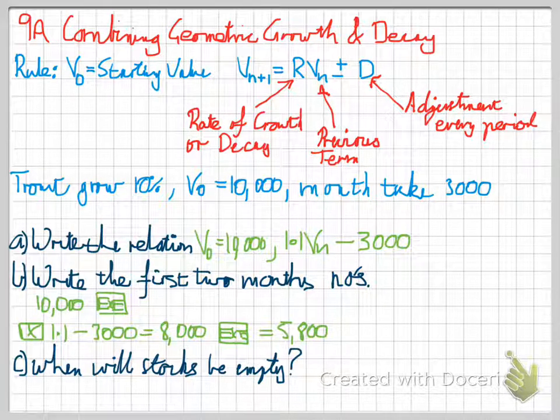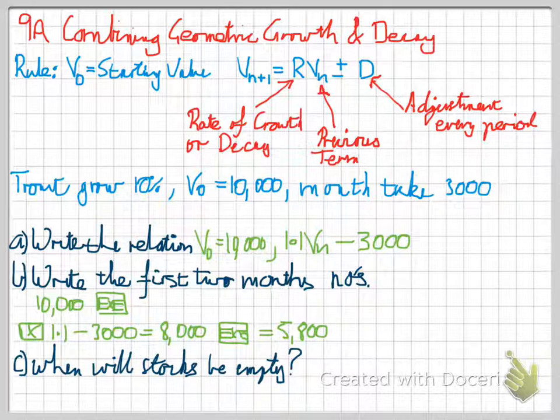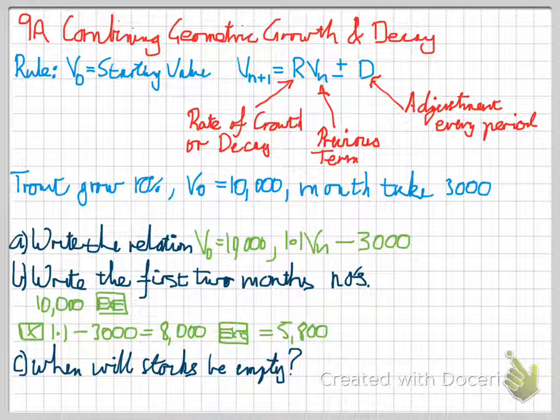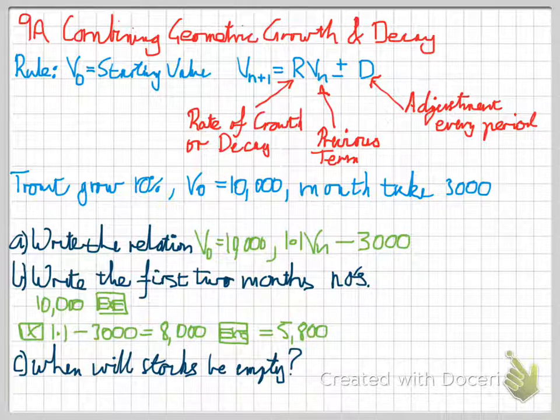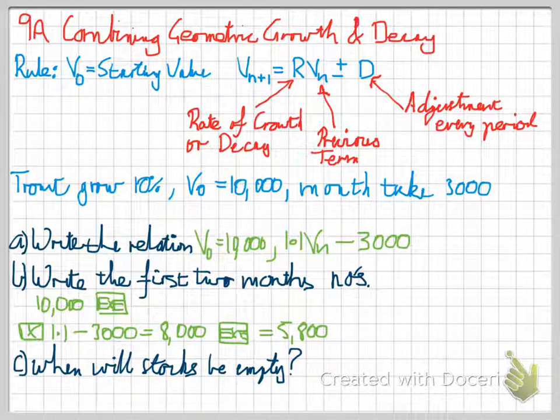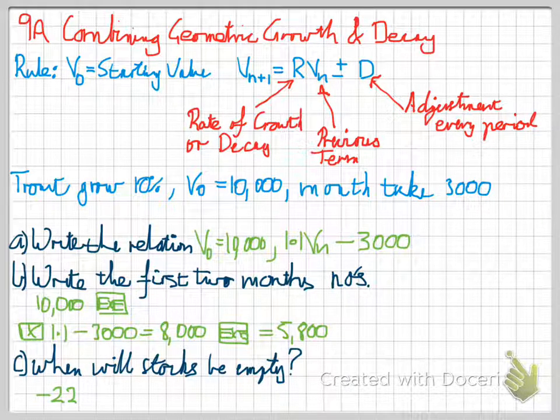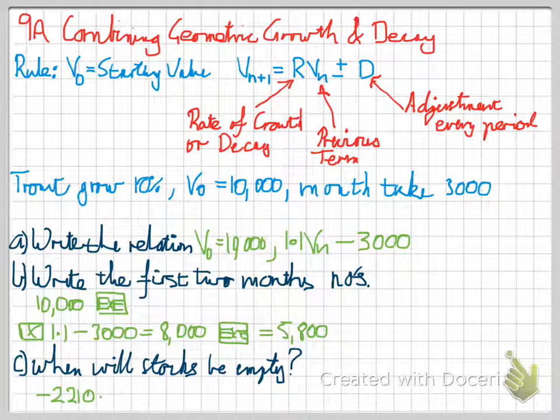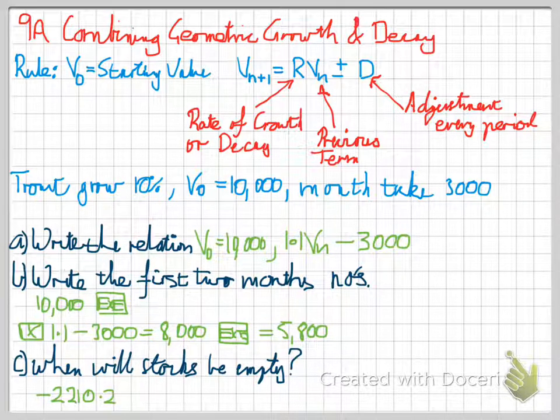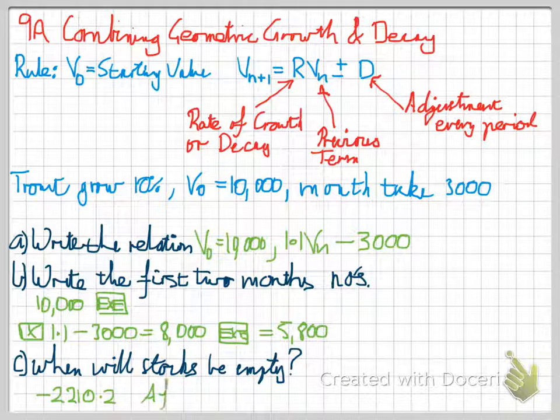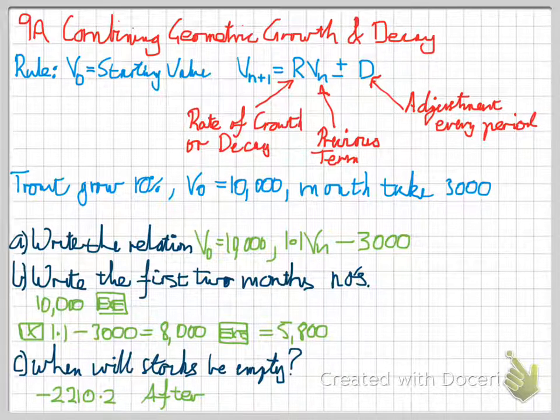Now when will stocks be empty? If we keep hitting XE, what we're looking for is the first month where stocks dip to zero or below zero. And you'll see that after 5 months, our stocks hit a value of negative 2,210.0. So after 5 months, we won't have any trout left in our wherever it is. Fish farm, lake, river.